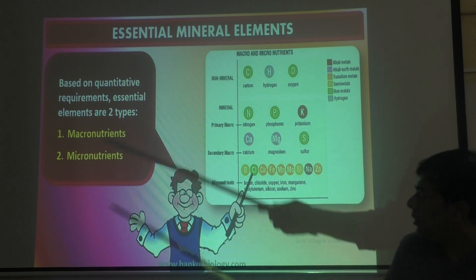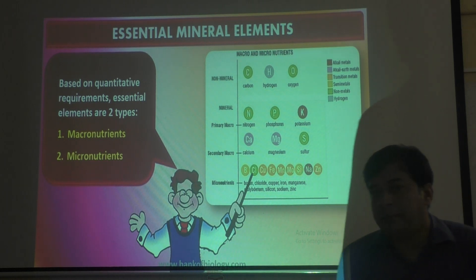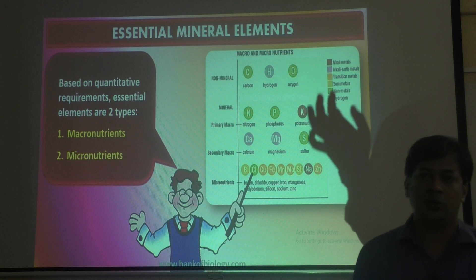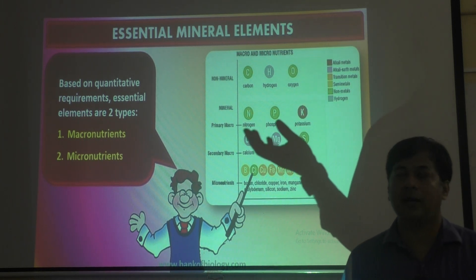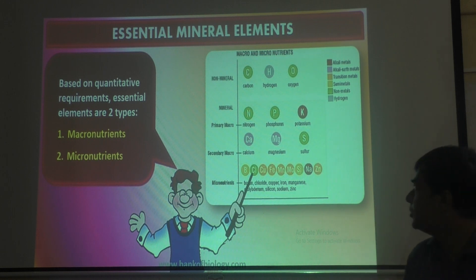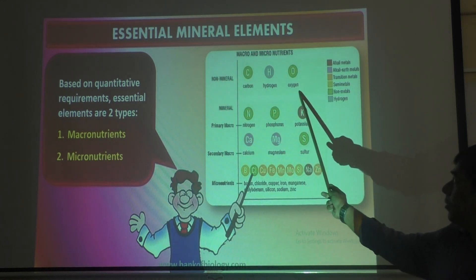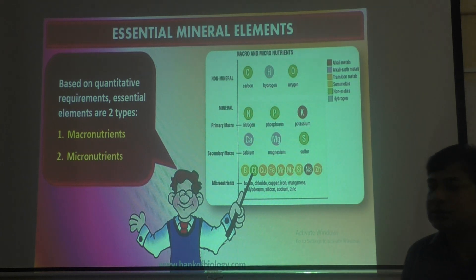So based on quantitative requirement, whether the plant requires less or more: if less, it is micro; if more, it is macronutrients. For neat point of view, what you should know is that carbon, hydrogen, and oxygen — C-H-O — these three are non-minerals.